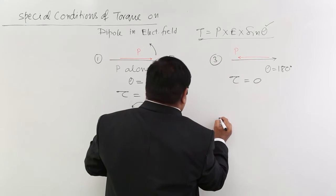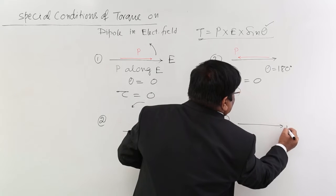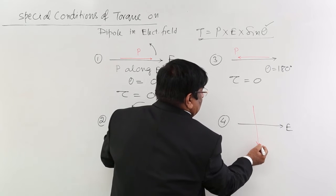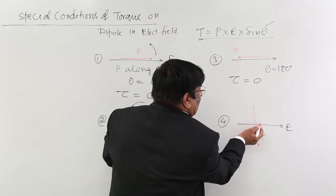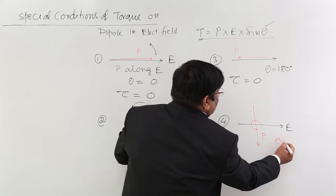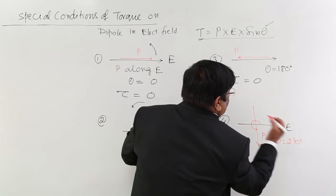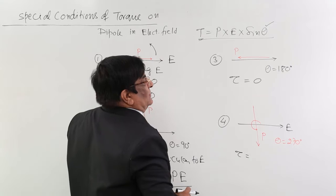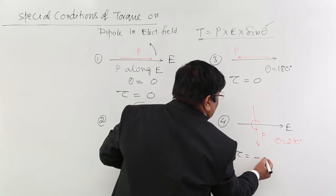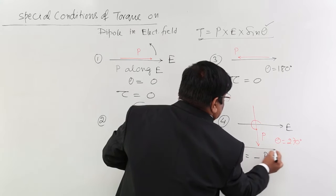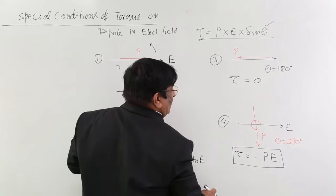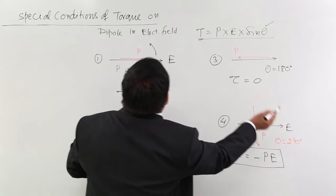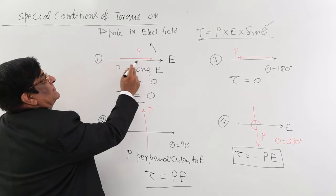Now the fourth condition: rotating the dipole further, this angle is now 270 degrees. Torque = PE × sine 270. Sine 270 is minus 1, so the torque is minus PE. Rotating it further to 360 degrees, P returns to the original direction and we come back to condition number 1.